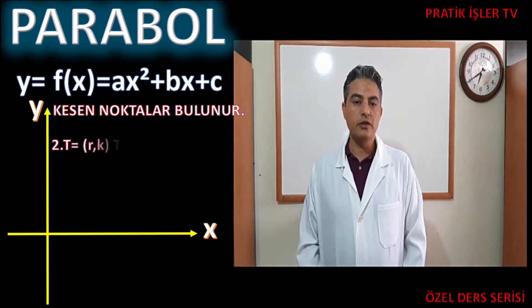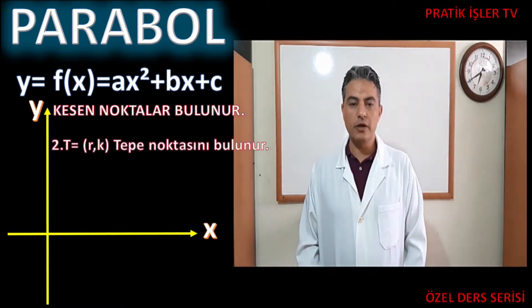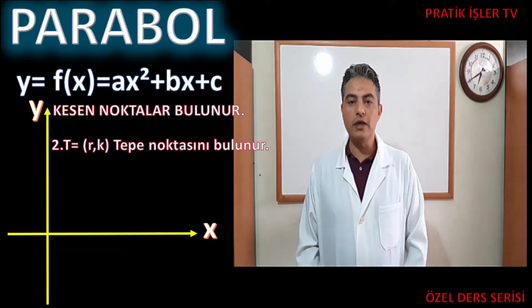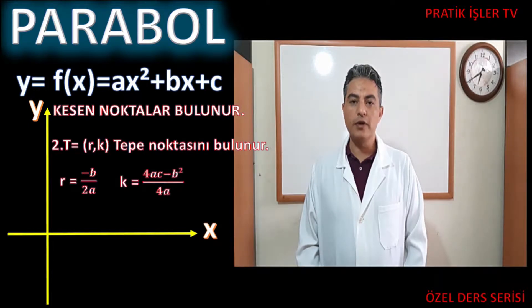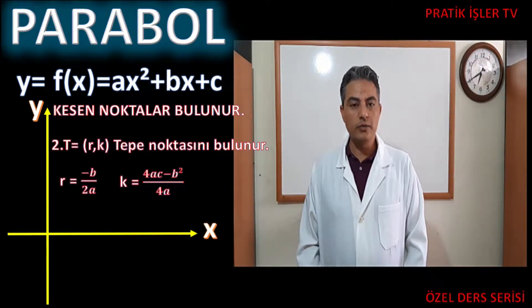T is equal to r and k is defined by r. Burada r eksi b bölü 2a, k 4ac eksi b kare bölü 4a şeklinde formülüze edilir. Lakin k'nın formülünü unutabilirsiniz.